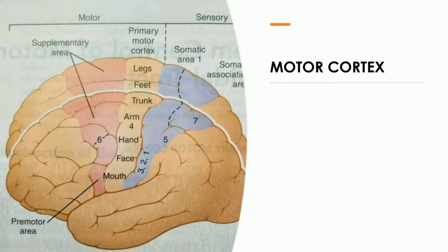Before we discuss pyramidal tracts, we must know from where these fibers are originating. They originate from the cortex — the brain cortex — specifically the motor cortex. We have a very prominent sulcus, that is the central sulcus, and the part anterior to the central sulcus, which is present in the frontal lobe. That prominent portion of the posterior part of the frontal lobe is occupied by what we call the motor cortex.